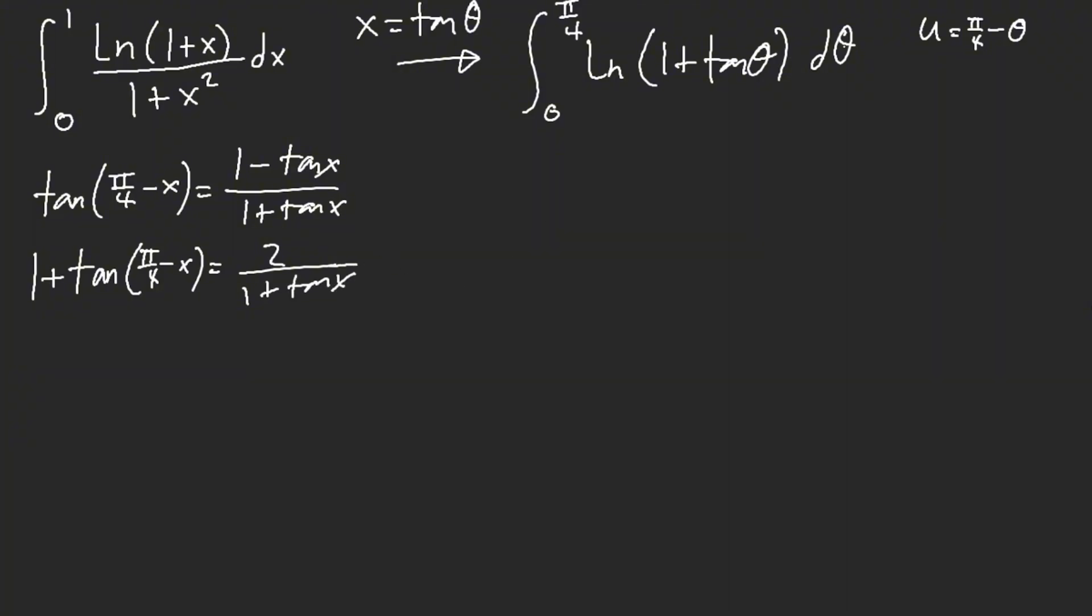All right, now watch this. That's exactly what we have. We have 0 to pi over 4, so I'm going to call this i. This is i, and with the u substitution, we have ln of 1 plus tangent of pi over 4 minus theta. We end up with 2 over 1 plus tangent of theta. But wait a minute.